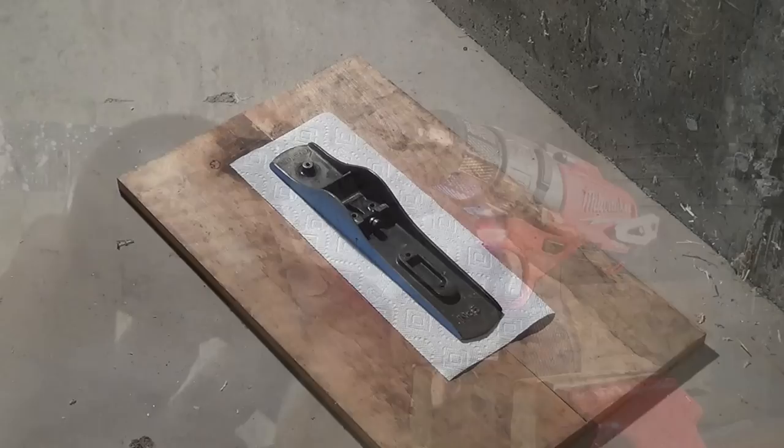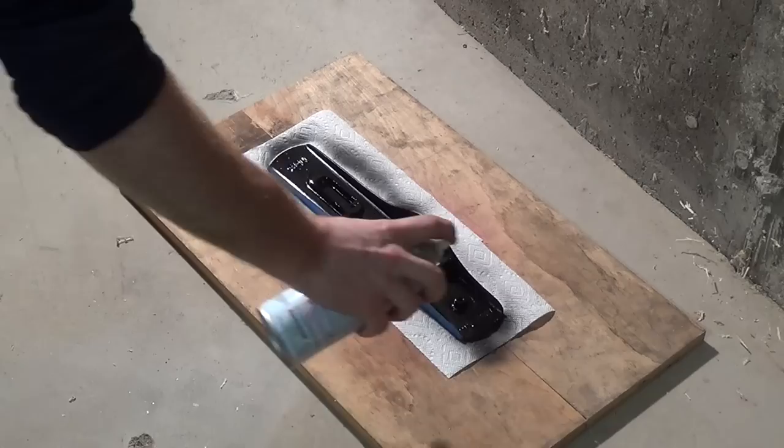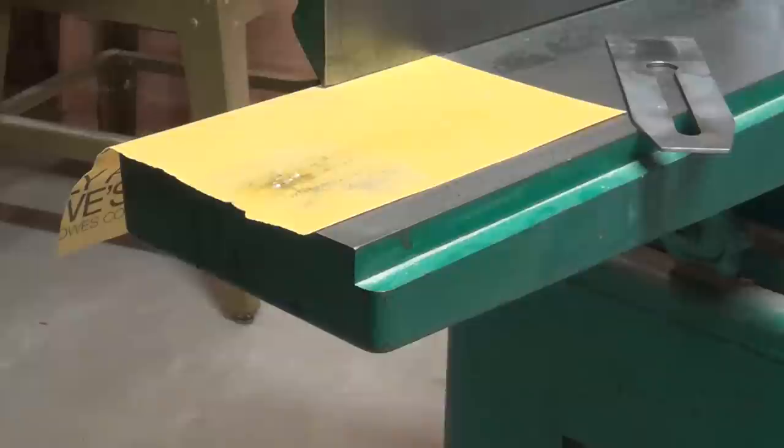I taped off the sides of the base earlier for painting, so I went back now and sprayed it with the black gloss paint. While that was drying, I went back to the jointer and started flattening the back of the blade.